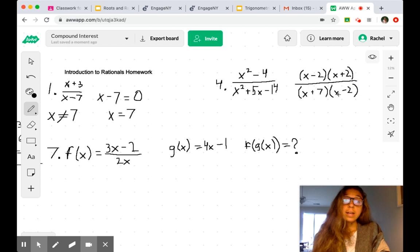And so our domain will exist everywhere except when x is negative 7 or positive 2. Because then we have zeros in our denominator. And that is a no can do.